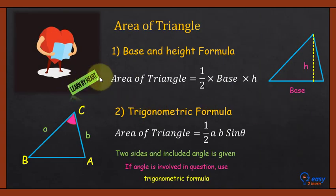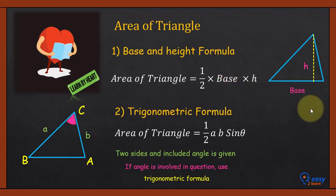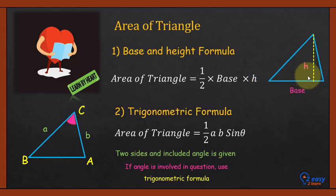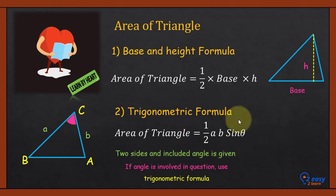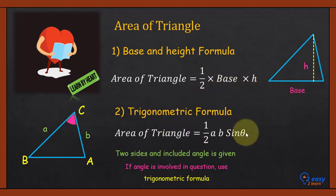At the end, learn these two formulas by heart. First: 1/2 × base × height. The most important thing is to understand which side is the base and what the corresponding height should be. Second: the trigonometric formula — 1/2 × A × B × sine θ — used when two sides and the included angle are given. If an angle is involved in the question, use the trigonometric formula; otherwise, use 1/2 × base × height.